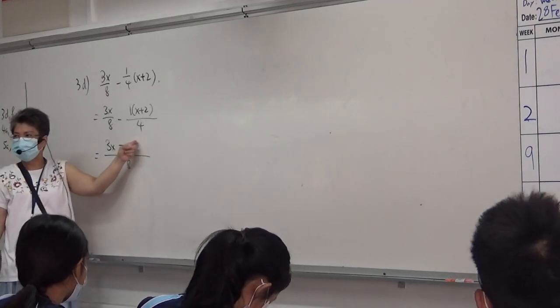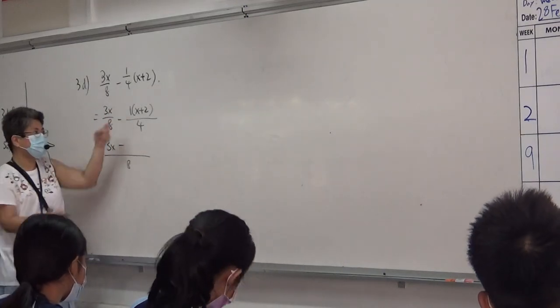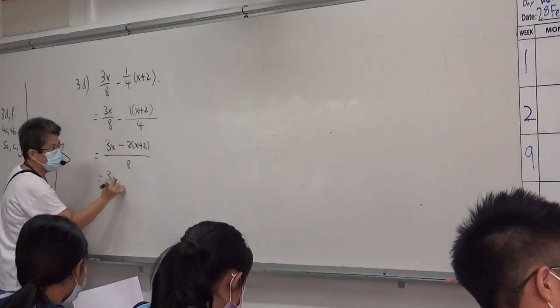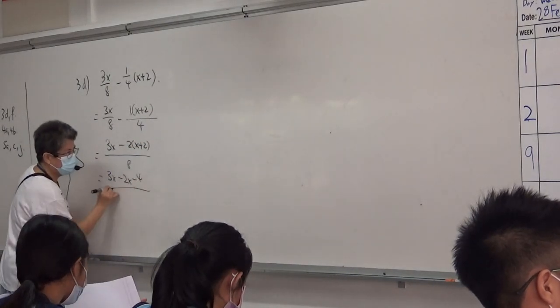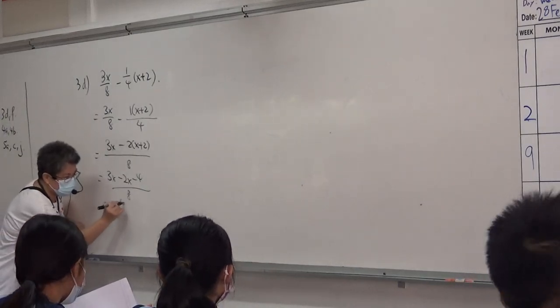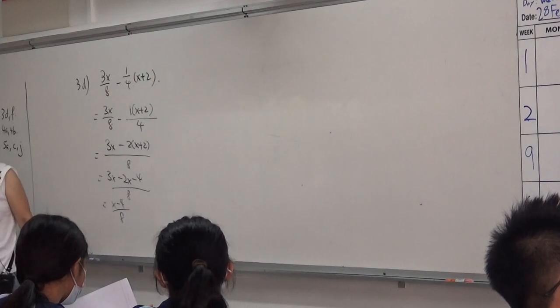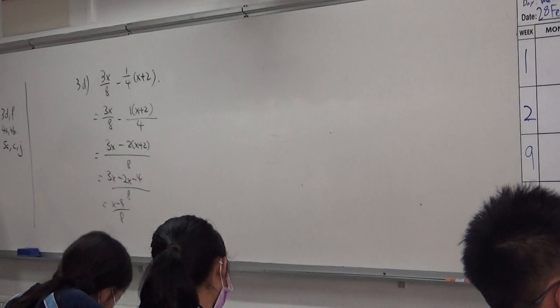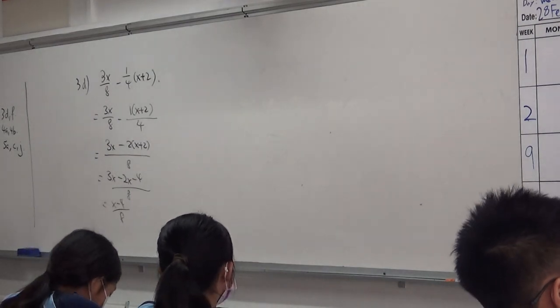8 divided by 4 is 2. 2 times 1 is 2. So 3X minus 2X minus 4 over 8 simplifies to X minus 4 over 8. That's right. Okay, that's right. I don't see why that should be a problem. Okay, next one.